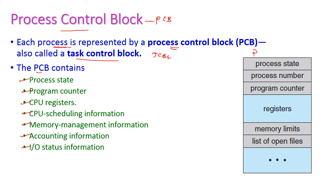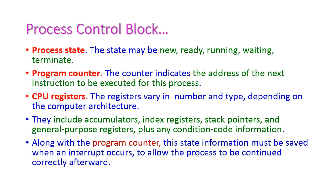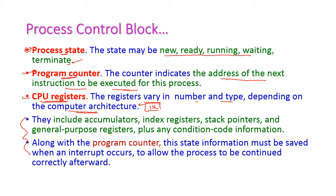The PCB stores: process state (any of the five states), process number, program counter, CPU registers, memory limit, and list of open files. The program counter indicates the address of the next instruction to be executed. CPU registers vary in number and type depending on computer architecture and are used for various purposes within the CPU.